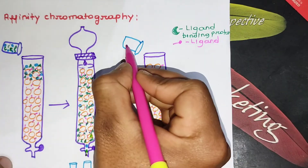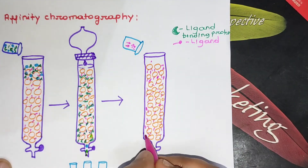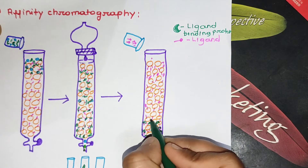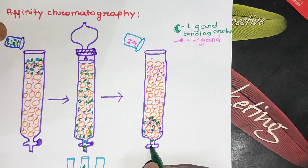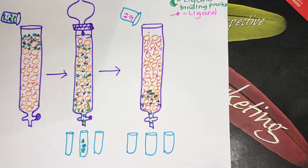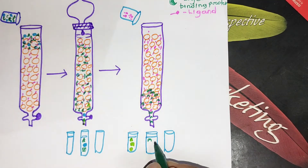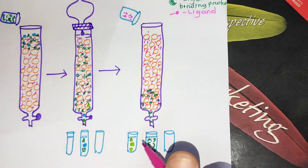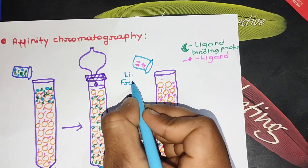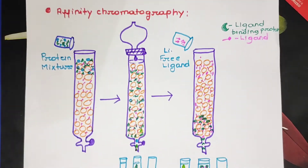To remove the ligand-binding proteins from the ligands, there are two processes. First, we can add a solution of salt. Second, we add a free ligand — those free ligands compete with the ligands attached to the beads. The ligand-binding proteins then attach to those free ligands, and the free ligand–protein complexes are eluted from the column into the tubes.